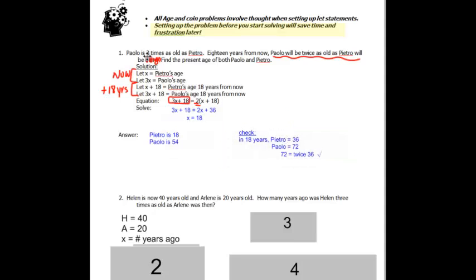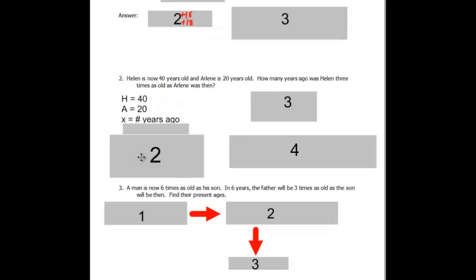So what you then want to do is check it. How old will Petro be in eighteen years? It's going to be thirty-six. And Paolo will be seventy-two because they're both plus eighteen years. Is it true that he'll be twice as age in eighteen years? Yes. Let's take a look at number two.